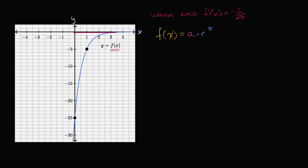So what is f of zero? When x is equal to zero, we're essentially asking where does it intersect the y-axis. We see f of zero is negative 25. So a is going to be negative 25. When x is zero, r to the x is just one, so f of zero is going to be negative 25. We see that right over there.